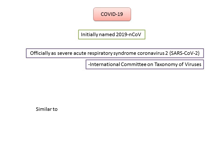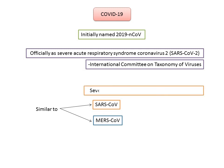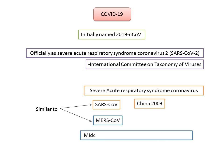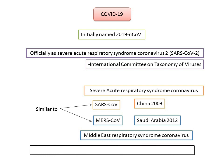SARS-CoV-2 is responsible for causing pneumonia of unknown etiology that rapidly develops into acute respiratory distress syndrome, similar to the SARS-CoV and MERS-CoV outbreaks in the past. SARS-CoV is the Severe Acute Respiratory Syndrome Coronavirus responsible for the outbreak in China in 2003. MERS-CoV, that is the Middle East Respiratory Syndrome Coronavirus, was responsible for a similar outbreak in Saudi Arabia in 2012. At least six other types of coronaviruses are known to infect humans, with some causing the common cold.